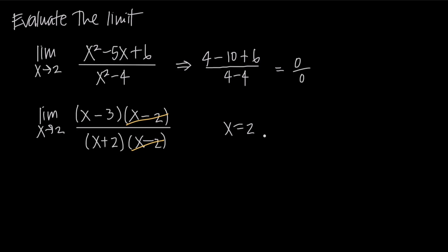But because we were able to cancel this factor, we call it a removable discontinuity. That's really a side point. The point here about solving for the limit is that we've been able to cancel these factors, leaving us now with just the limit as x approaches 2 of x minus 3 in the numerator and x plus 2 in the denominator.